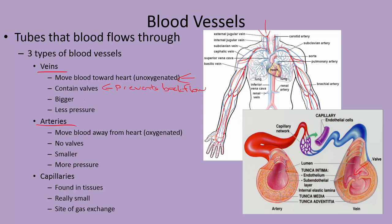The next type of blood vessel is arteries. They move blood away from the heart, so it's oxygenated — red in color. Blood moves away from the heart through the aorta, which is the largest artery. There are no valves in arteries, and they have much higher pressure due to the extra muscle lining in the left ventricle. Arteries are typically a little bit smaller than veins.